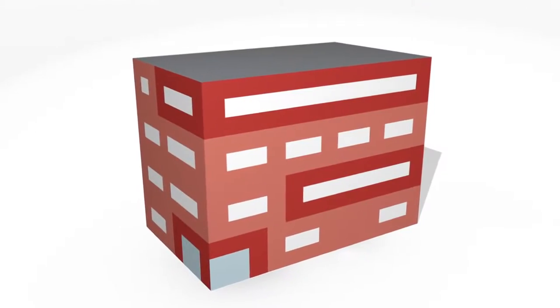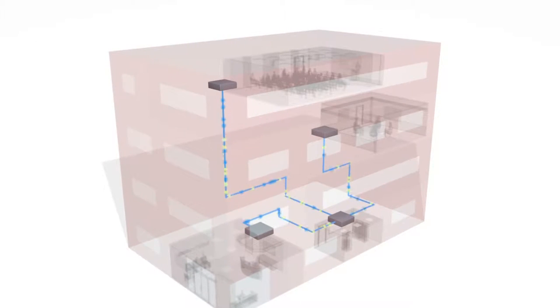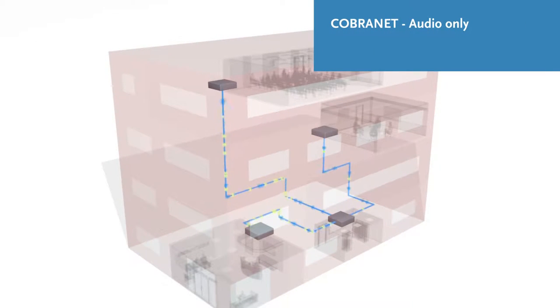There are a number of advantages for running AV across your network, and we'll focus on two of the leading protocols: CobraNet, which supports audio streaming only, and Audio Video Bridging, or AVB, which is designed for both audio and video streams.